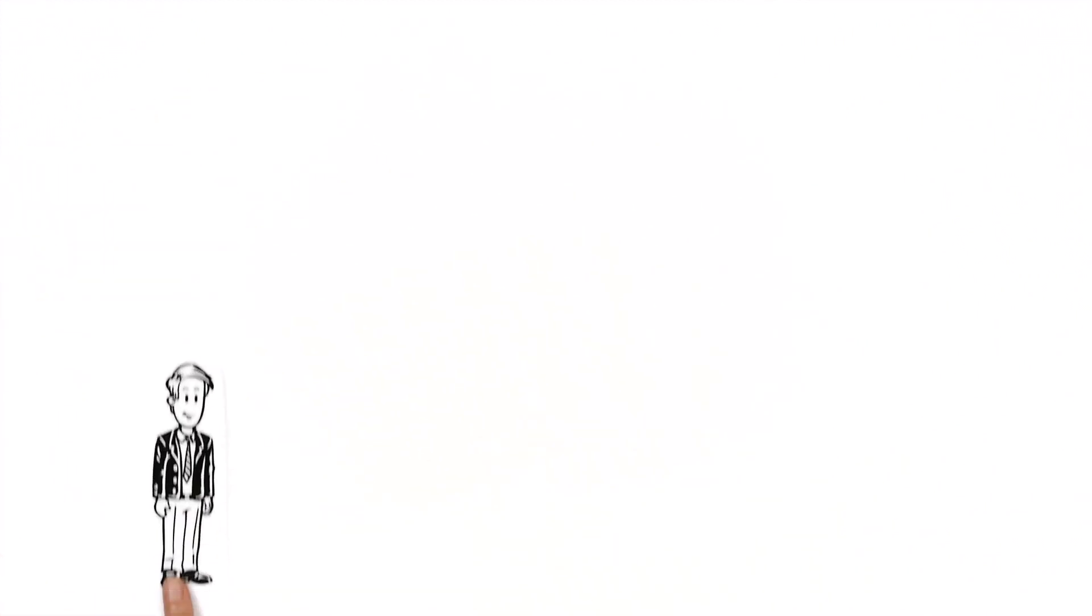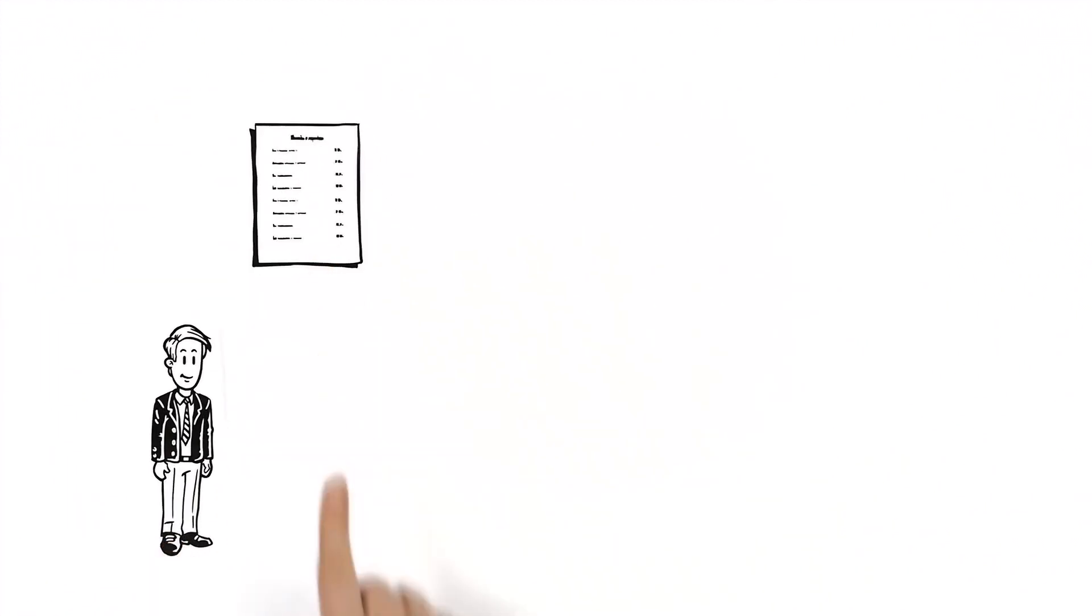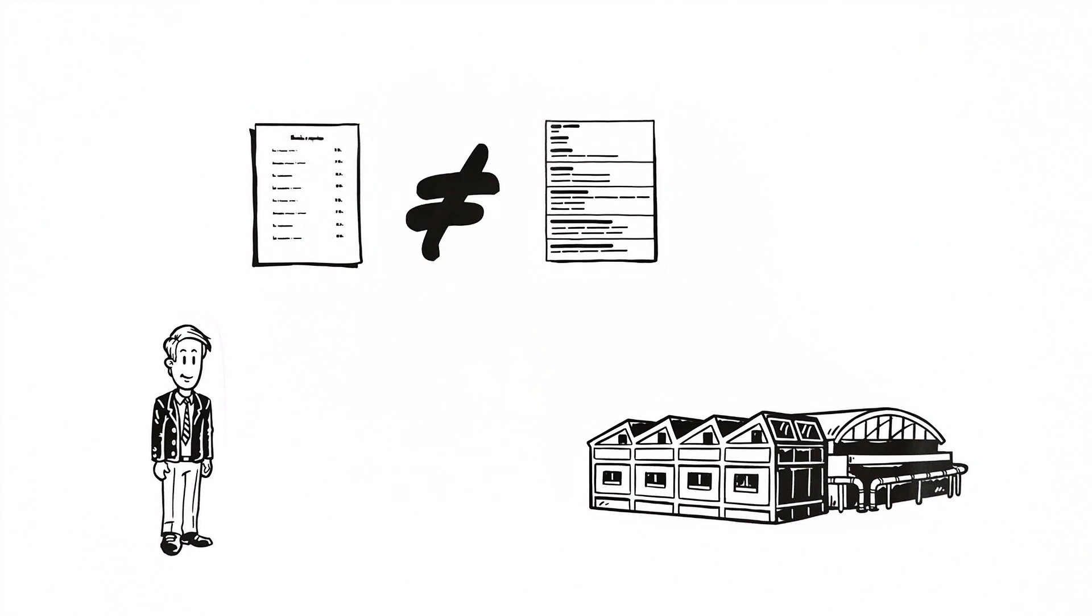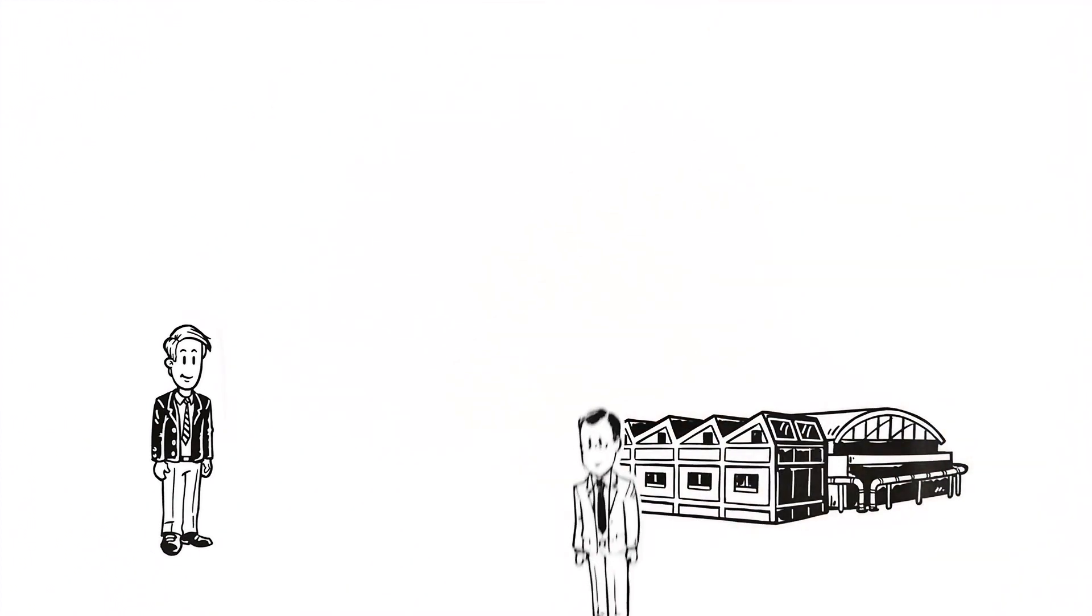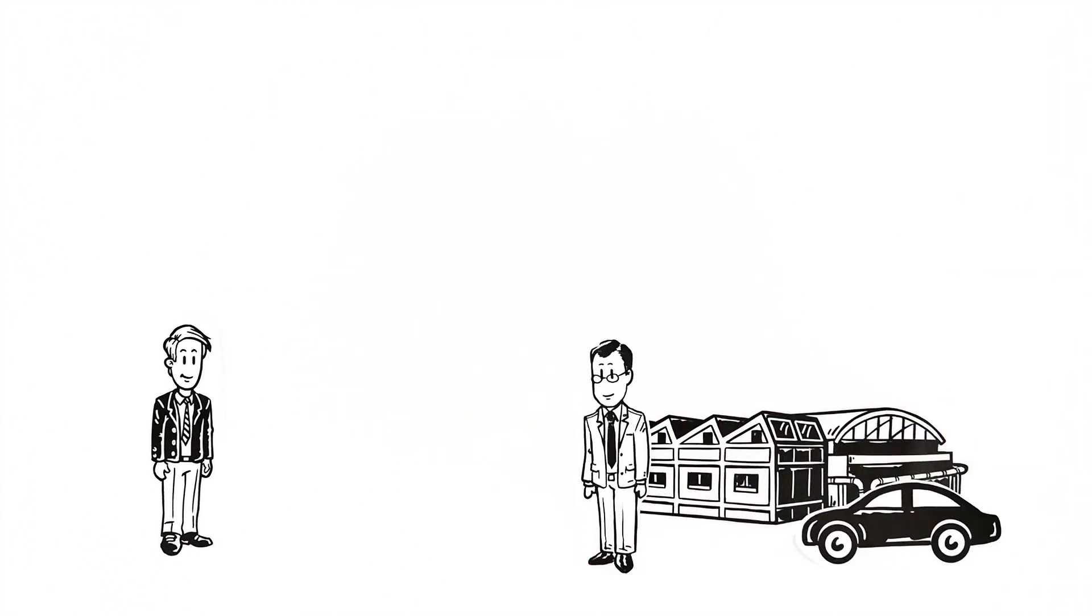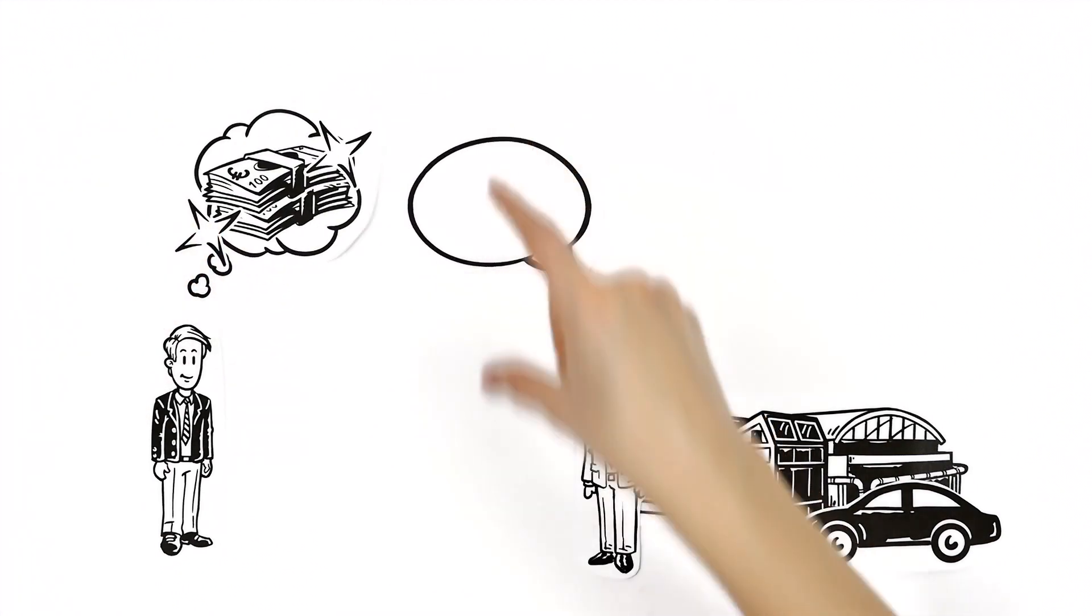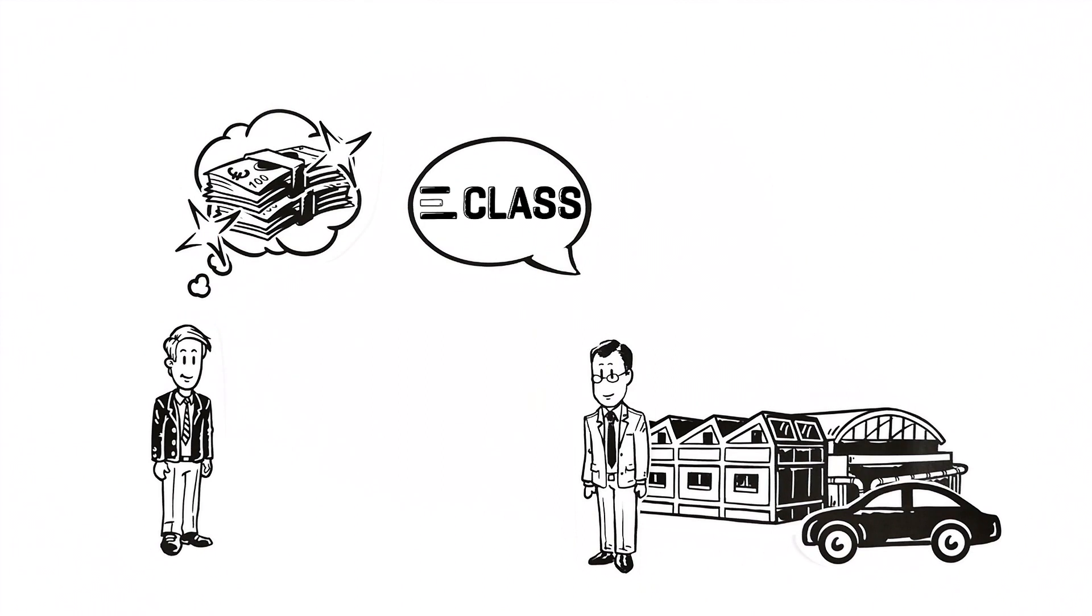It only becomes problematic if Paul's organizational system and the customers don't seem compatible. Recently, a major automotive company contacted Paul about a possible order. Jackpot. But then, the customer mentioned E-Class and asked whether Paul's product data were described according to E-Class standards.